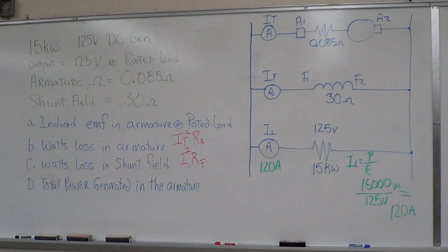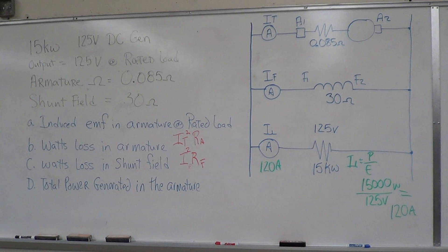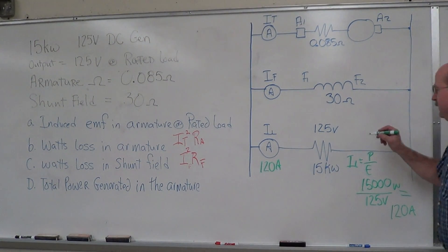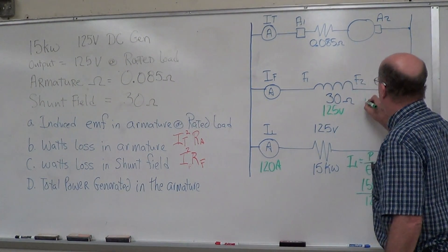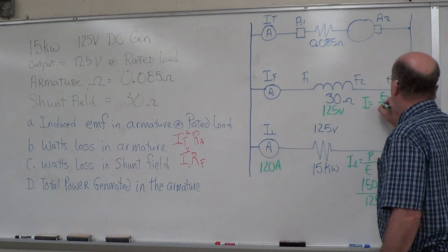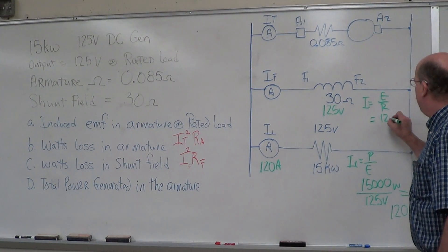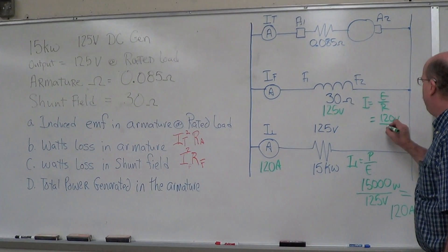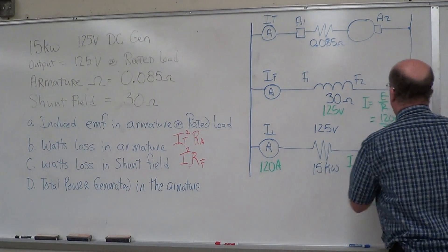Let's do our shunt field next. We've got 30 ohms, and we have our voltage because the shunt field is in parallel, so 125 volts. I equals E over R.